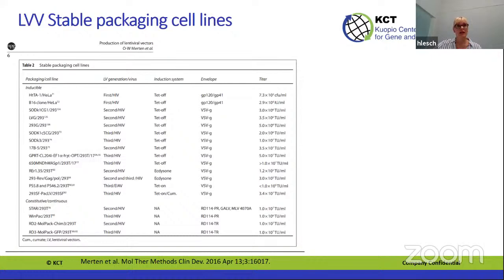Development of stable lentiviral packaging cell lines has been more troublesome, especially because VSV-G is toxic and viral proteins are toxic. A list of cell lines catalogued by Otto Merten in his review article shows that most developed cell lines are based on tetracycline regulation and inducible systems. Constitutive cell lines are available, but constitutive production has only been active when VSV-G has been replaced with another envelope.